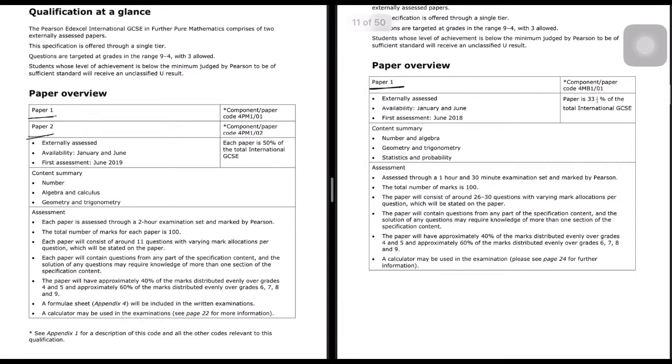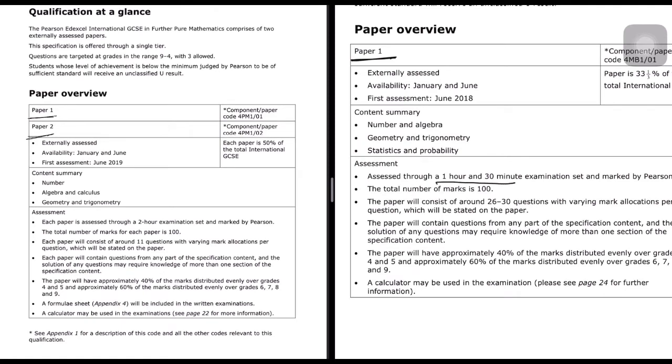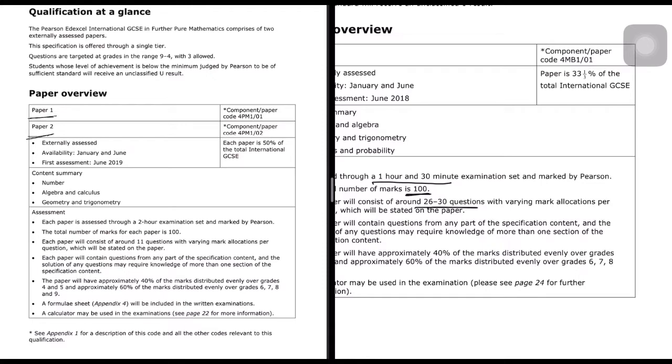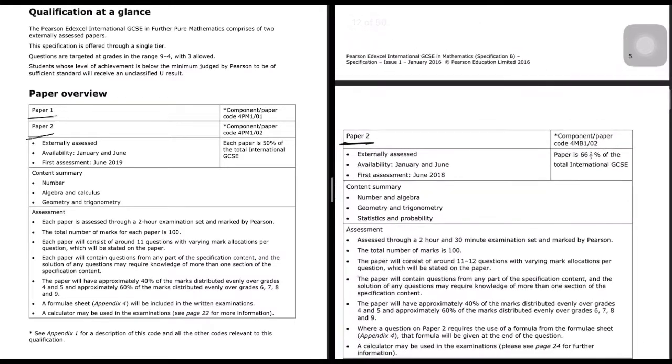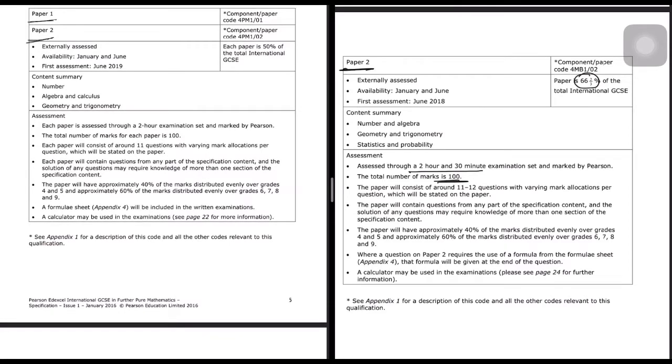For Mathematics B, Paper 1 is one hour and 30 minutes exam with total marks of 100 and there will be 26 to 30 questions. In the final result, it will be 33 and one-third percent. Paper 2 is a two hour and 30 minutes exam, also 100 marks, but the final calculation is 66 and two-thirds percent. Both papers combined equal 100 percent.